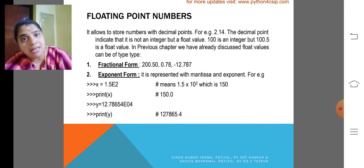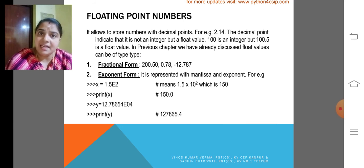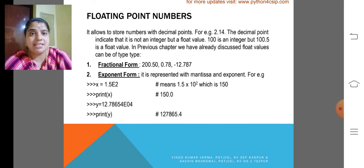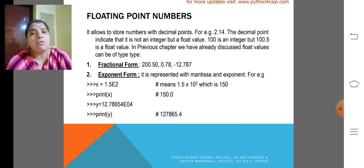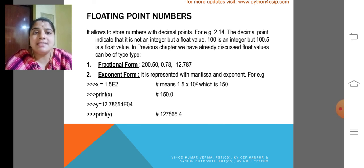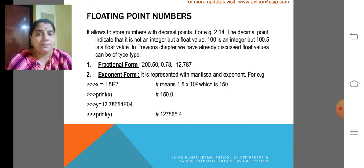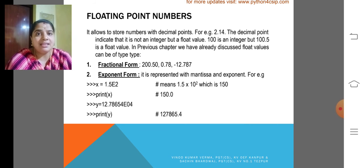Once again, I am reminding, floating point numbers can be either positive or negative. Look at the next one. What will be the value of Y? 12.78654E04. We are trying to print E value, that is exponent form value. We will get 127,865.4.